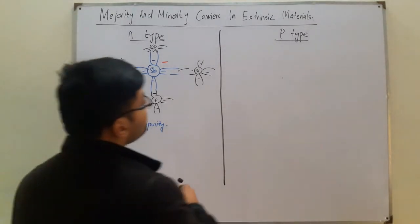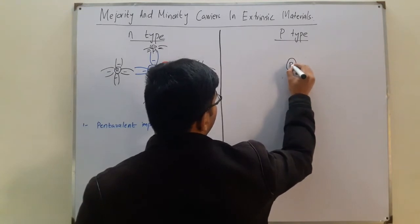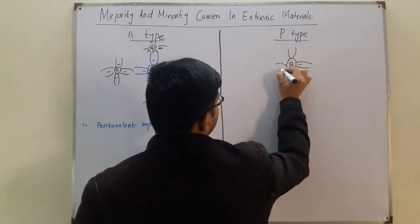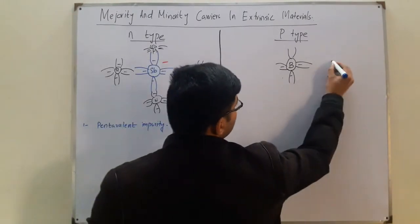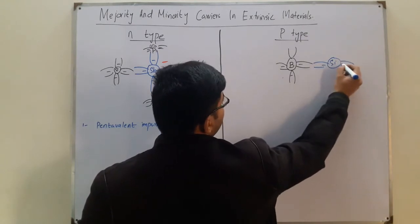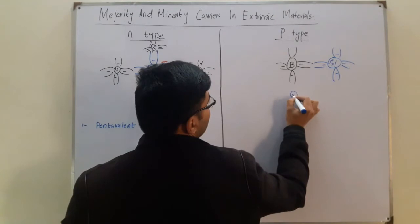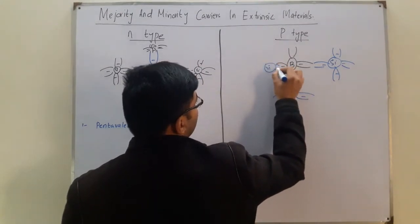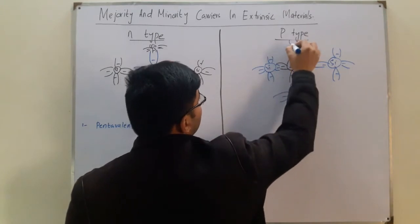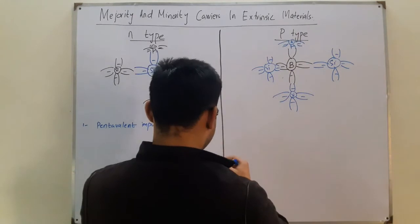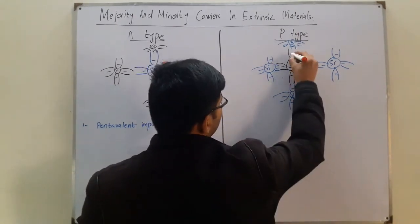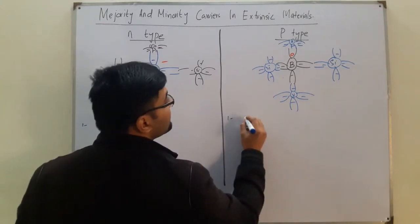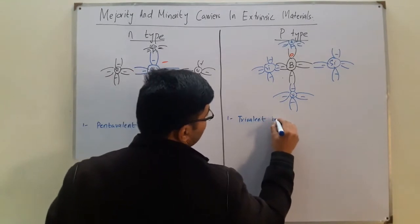Similarly, in the case of p-type, we added boron, which has three valence electrons. The silicon surrounded it from four sides, so what happened was that it introduced a vacancy of electrons — three covalent bonds and a vacancy. The first point for p-type is that a trivalent impurity is added.